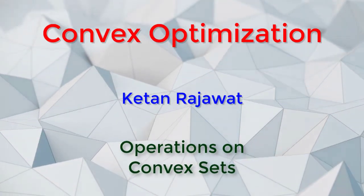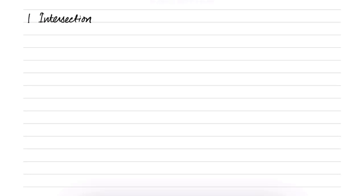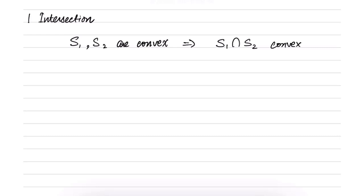Let us look at several operations on convex sets. The first is intersection. If two sets S1 and S2 are convex, then it follows that their intersection is also convex. This is not hard to see. Pictorially, you can imagine that if these are the two sets, their intersection is also convex.